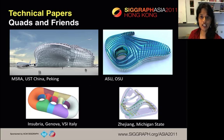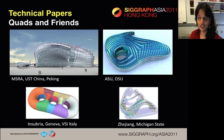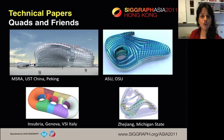In the session called Quads and Friends, we have papers that deal with quad meshes: a quad mesh modeling approach for architectural structure, a quad mesh editing paper with new connectivity editing operations, an approach for quad mesh parametrization, and a cross-frame field construction method.